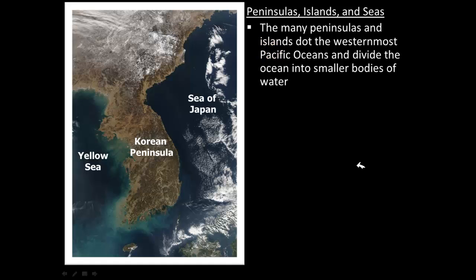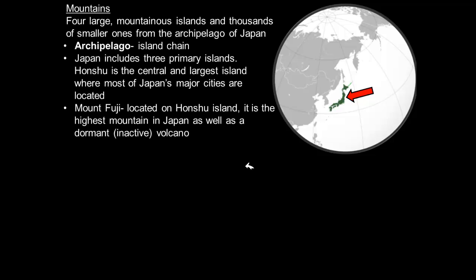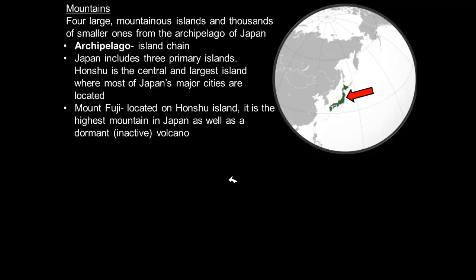Speaking of Japan — highlighted here in green on the globe — Japan is an island nation made up of a lot of mountains. It is basically four large mountainous islands and many smaller ones, which together form an archipelago, meaning a chain of islands, very similar to how Hawaii forms a chain of islands. There are three primary islands in Japan. Honshu is the central and largest island, where most of Japan's largest cities are located.